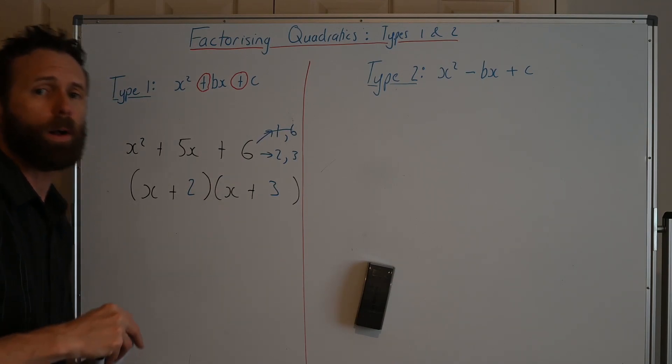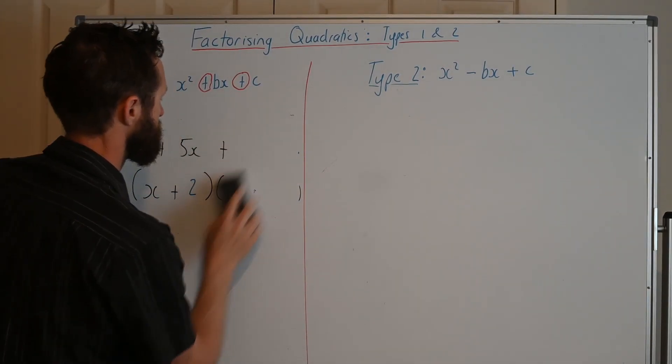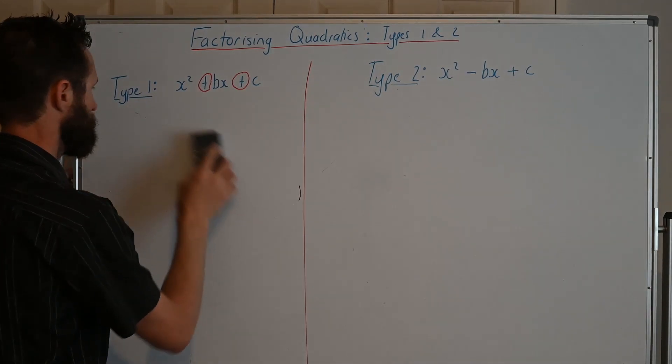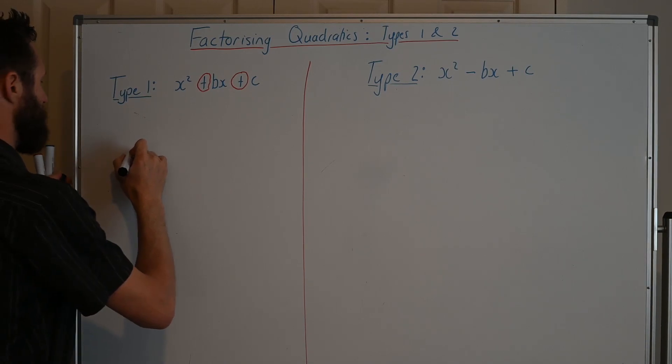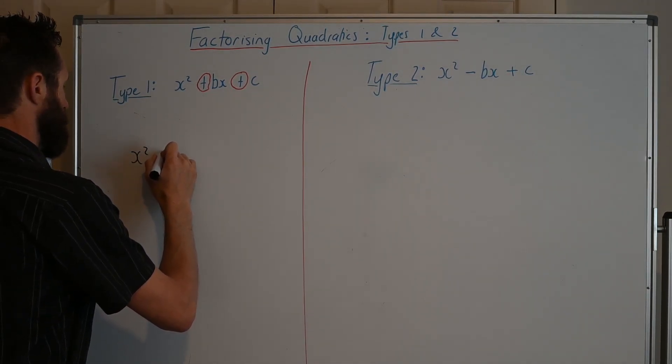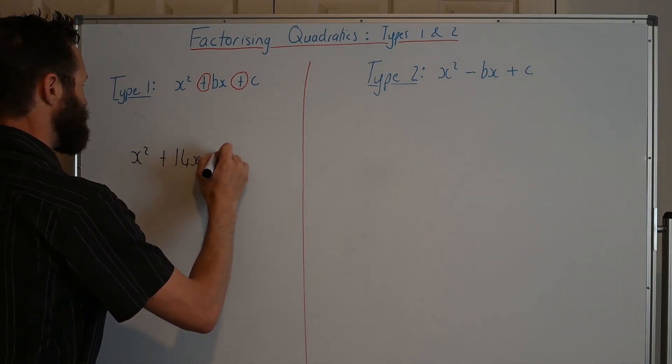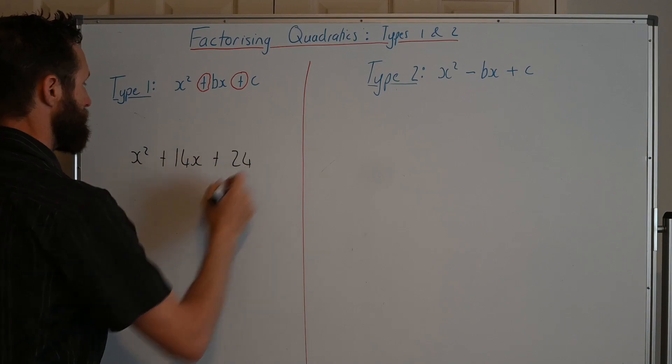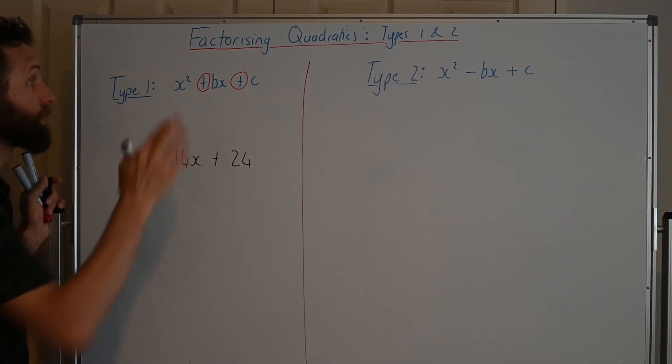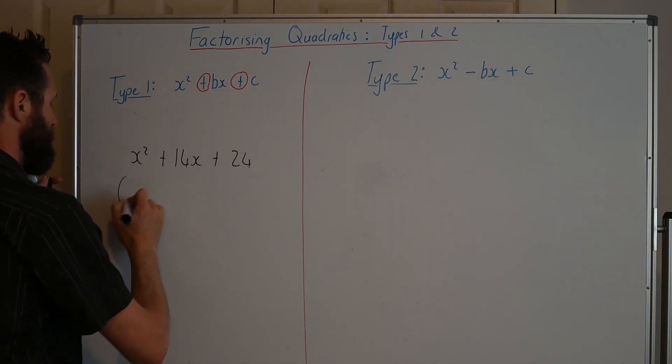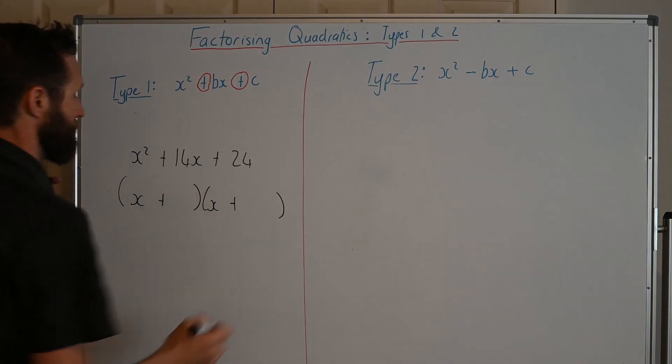Allow me to give you one more before you get into the worksheet and do this section. Let's say we've got something like this, x² + 14x + 24. Now we see, first of all, plus plus. This must mean that it is type 1, which means that we're going to have (x + something) and (x + something).